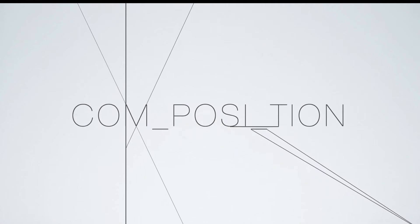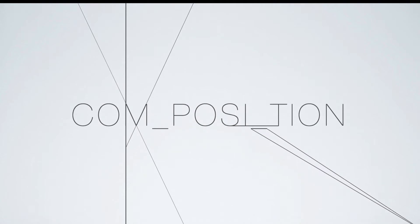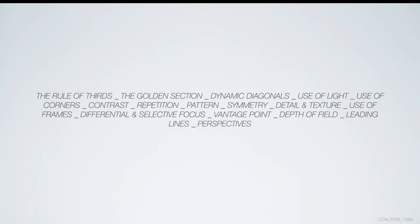We've already had a look at composition briefly when we introduced the 'taking the box for a walk' project, so we're just going to expand upon some of those original compositional ideas. On the screen are some of the main compositional ideas that apply to a lot of photographs: the rule of thirds, the golden section, dynamic diagonals, use of light, use of corners, contrast, symmetry, detail, texture, differential focus, vantage points, depth of field, leading lines, and perspective. I'm going to go through some of them because no doubt you've heard of some, but some you might be unclear of.